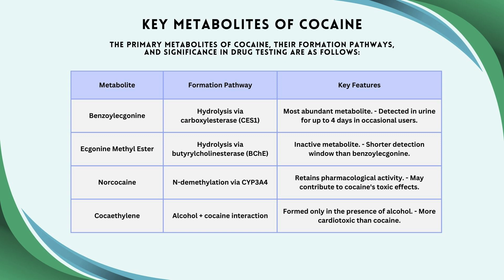Let's look at the metabolites of cocaine in more detail. Benzoylecgonine is produced via a hydrolytic reaction with the enzyme carboxylesterase CES1. It is the most abundant metabolite and is detected in urine for up to four days in occasional users — benzoylecgonine is the metabolite found in a urine drug screen. Ecgonine methyl ester is produced hydrolytically via butyrylcholinesterase (BCHE). It is an inactive metabolite with a shorter detection window than benzoylecgonine.